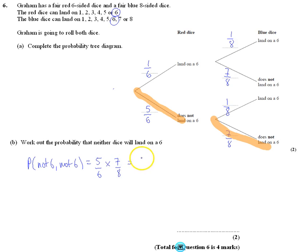So just multiply: five times seven is thirty-five, and six times eight is forty-eight. The answer is thirty-five forty-eighths.